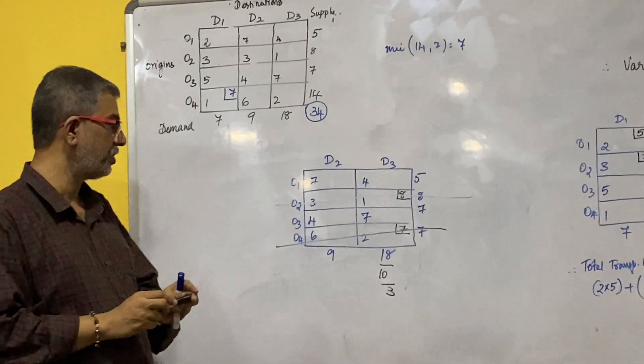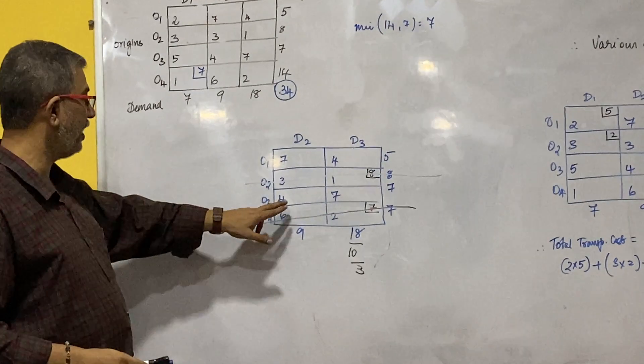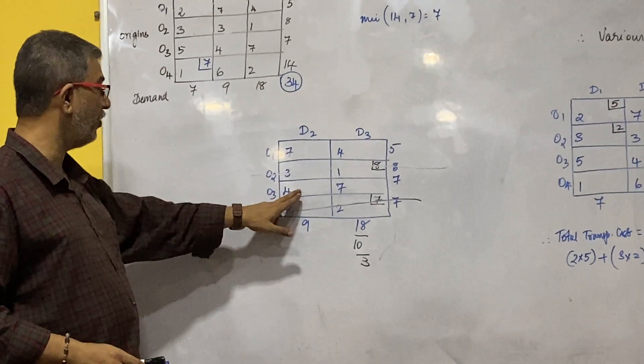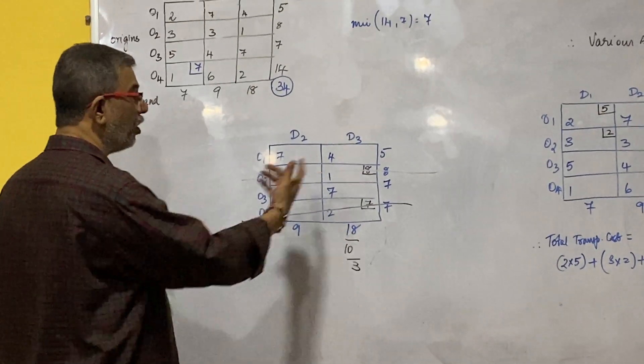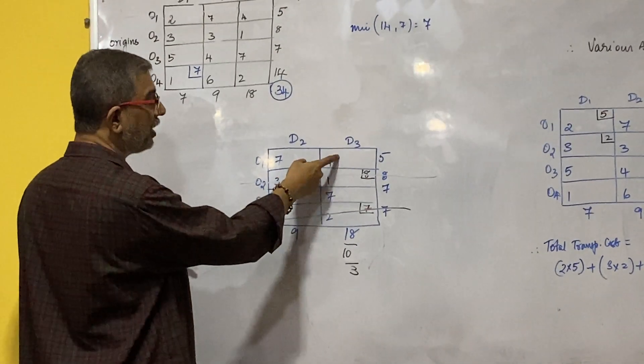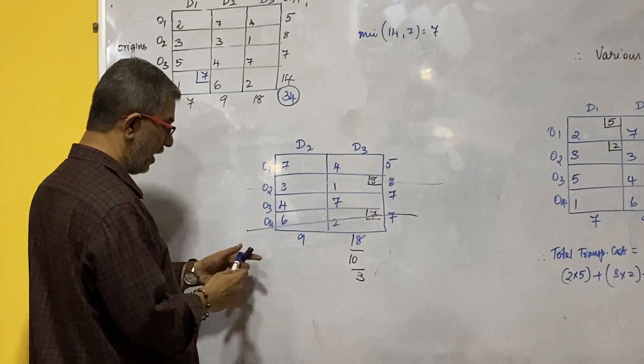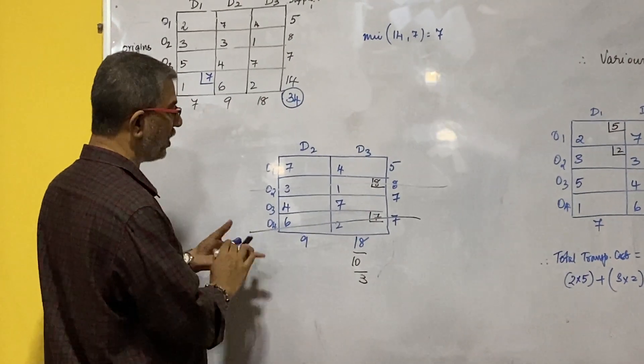Now what is the next lowest cost? Next lowest cost we have 4 over here and 4 is there. You can select any one of these. Say suppose I go with this one of 4. If I am selecting this 4, 5 and 3 should be compared and 3 will be entered over here.